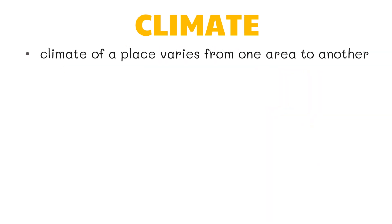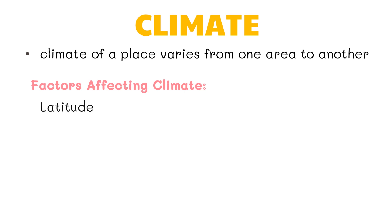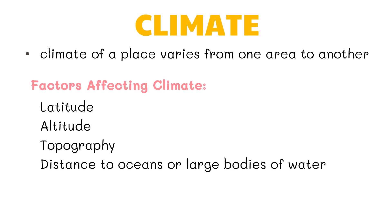The climate of a place varies from one area to another. The reasons for these differences can be quite complex, but there are some general factors that can be identified as affecting climate. These are latitude, altitude, topography, distance to oceans or large bodies of water, and ocean currents.